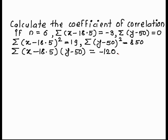Calculate the coefficient of correlation if n is equal to 6, summation of x minus 18.5 is equal to minus 3, and summation of y minus 50 is equal to 0.